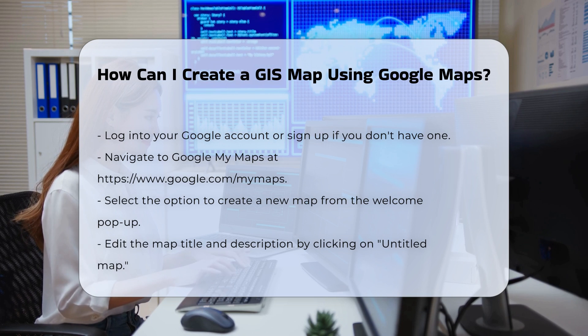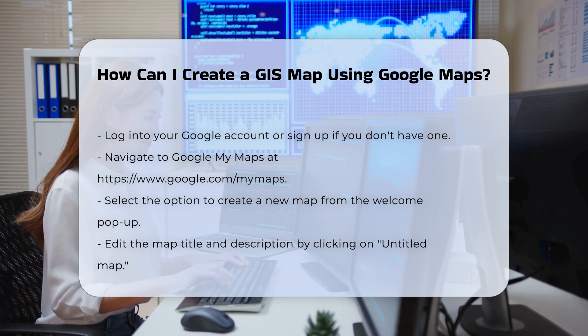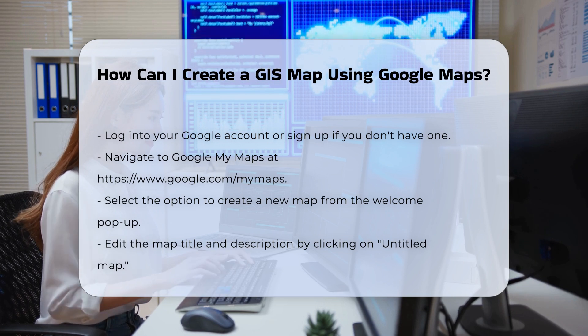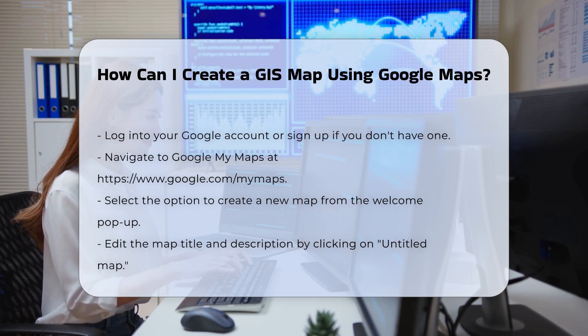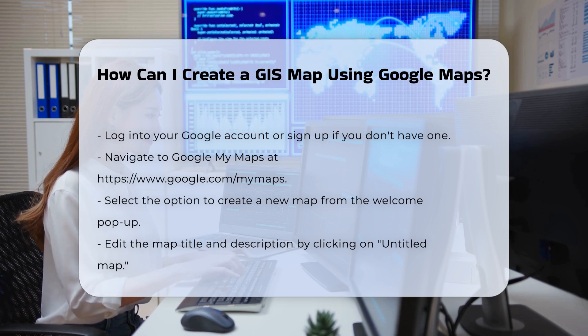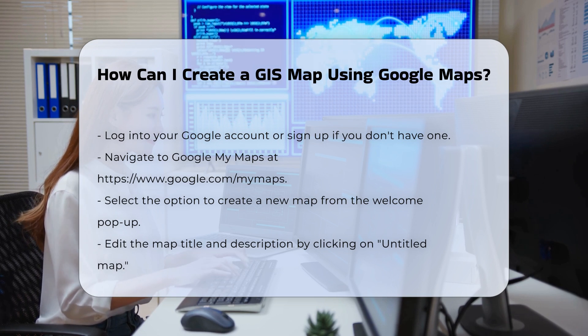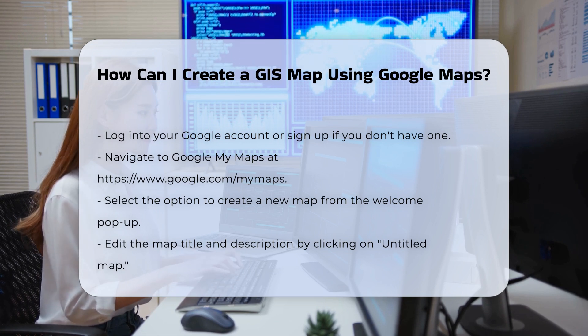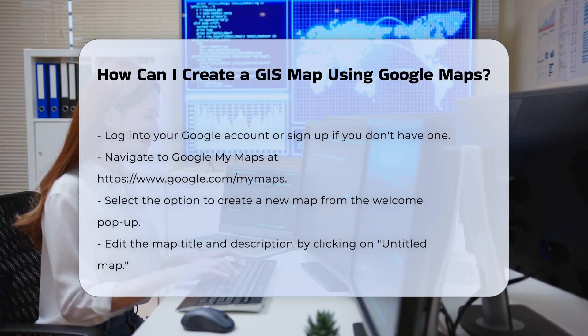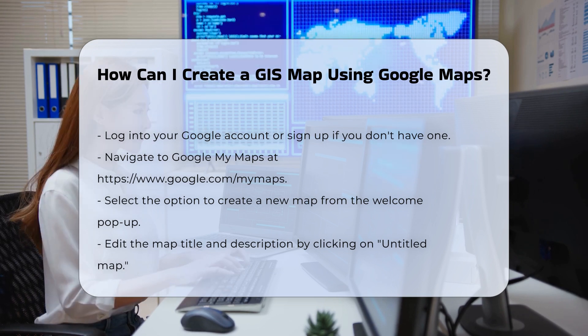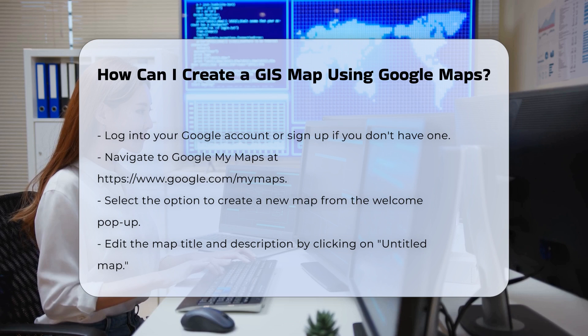Create a new map. Navigate to Google My Maps by going to maps.google.com/mymaps. When you arrive, you'll see a welcome pop-up where you can select 'Create a new map.'